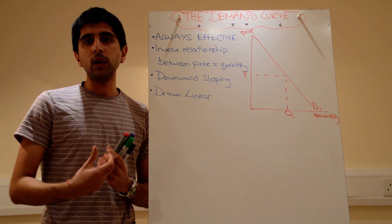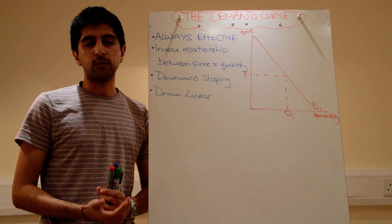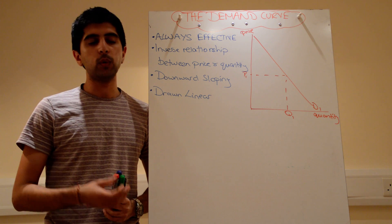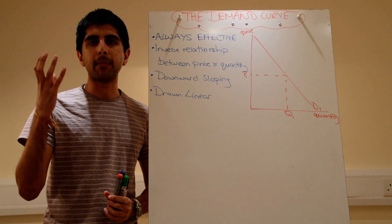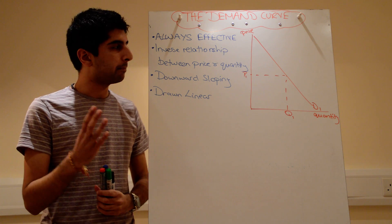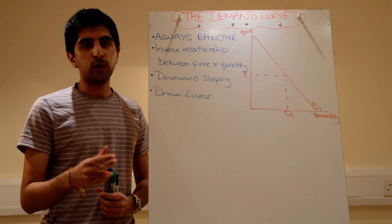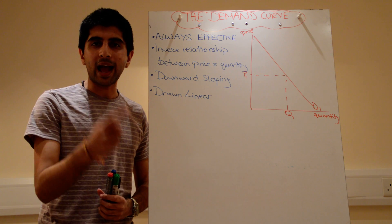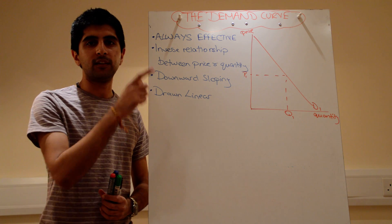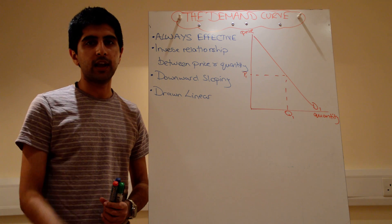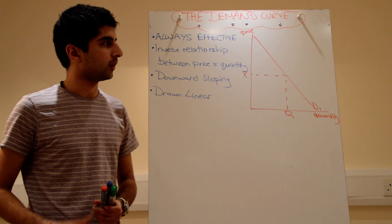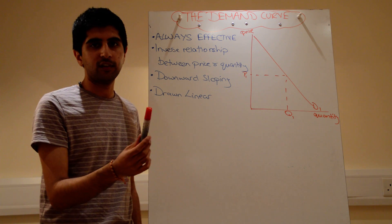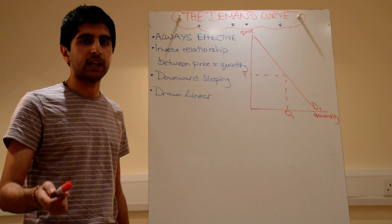Consumers must be willing and able to buy something. We're all willing to buy stuff — a luxury sports car, a massive house to live in — but a lot of us are not able. We need to be willing and able for demand to occur in economics. Demand is always effective; effective means willing and able.